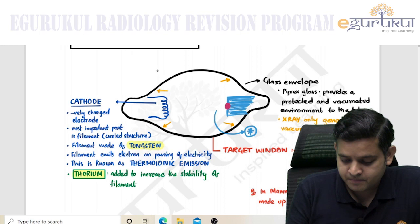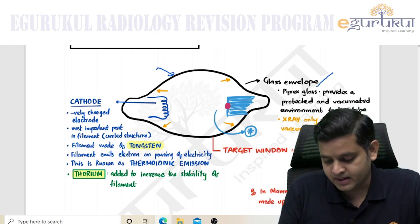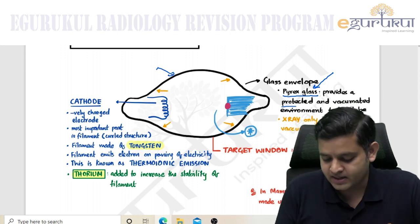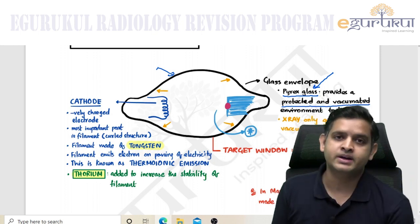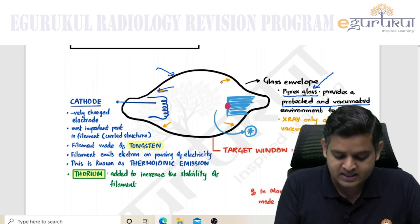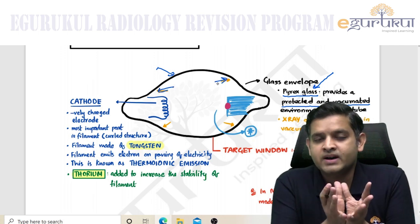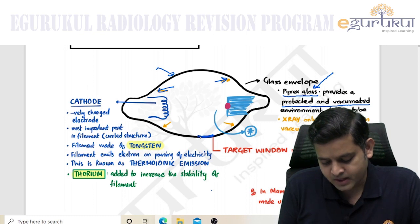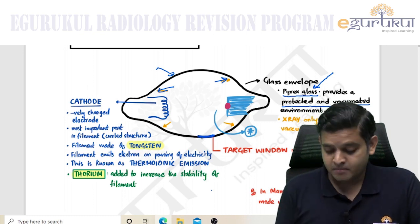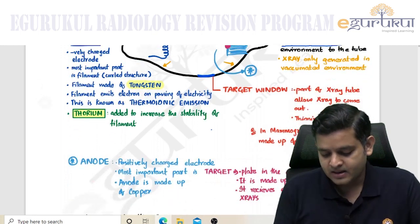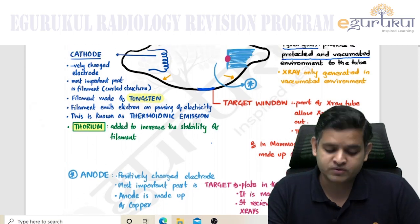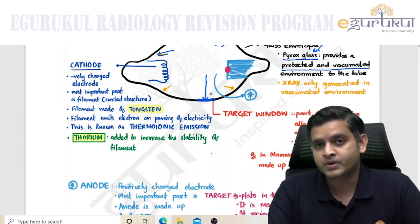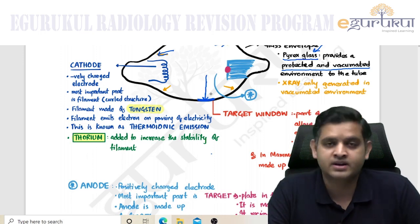Looking at the glass envelope, please remember it is made up of pyrex glass. The purpose is to provide a protected and vacuumated environment to the tube. It provides a protected environment so that x-rays do not escape, and a vacuumated environment so that x-rays can be generated. There is a window in the lower part of the envelope, which is nothing but the thinning of glass, allowing x-rays to come out of that particular part.